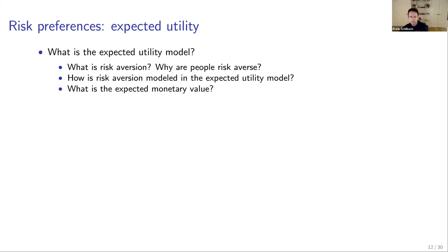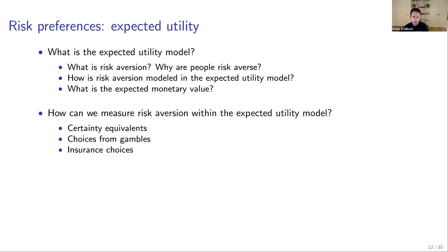The second broad topic is risk preferences, in particular expected utility. You need a clear understanding of the expected utility model, what risk aversion is, why people are risk averse, and how risk aversion is specifically modeled using concavity. You should understand expected monetary value versus expected utility, what concavity implies for risk aversion, and how to measure risk aversion — through certainty equivalents, choices from gambles, and insurance choices (the Sydnor paper).